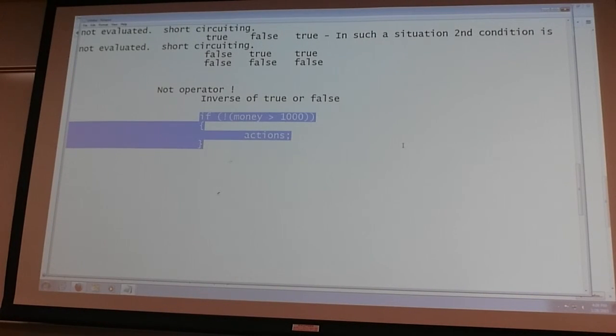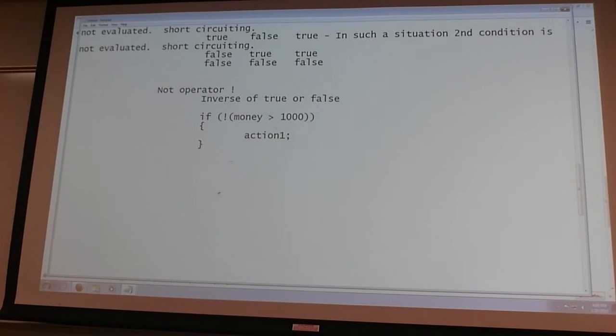If money is greater than thousand, not. Actions. So let me call this action 1. Declare money here and I'll say money is 5,000. Am I going to execute action 1? It's the inverse of that condition. So we're going to say 5,000 is greater than 1,000 which means what? True. And not of true is false. Therefore the result is not executed. The control is given to after my if-else block. And I'm going to execute the second condition. I mean second action excuse me. Okay?